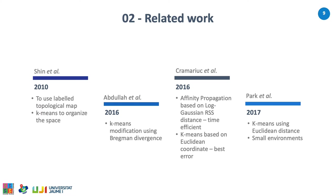Different authors have used k-means clustering with different variants, always trying to get better position accuracy, select the better cluster, and provide computational efficiency. For instance, Shin et al. proposed a tracking system that wields a labeled topological map and estimates the user's location, applying k-means to automatically organize the space in an unknown environment. Abdullah et al. slightly modified the k-means model by applying the Bregman divergence as a distance for cluster information.